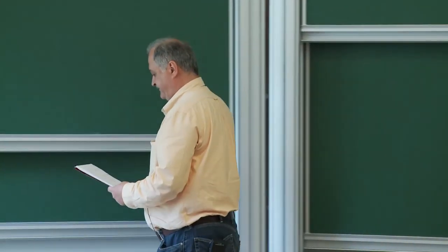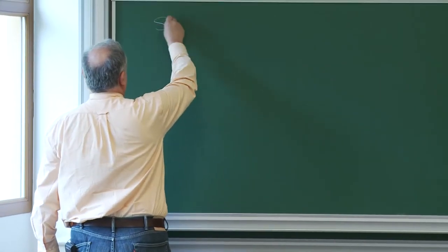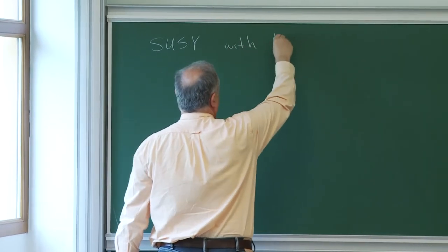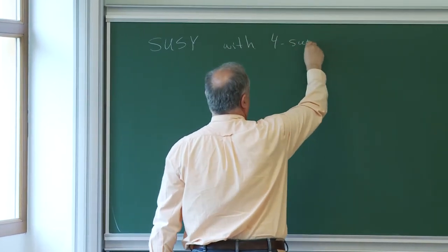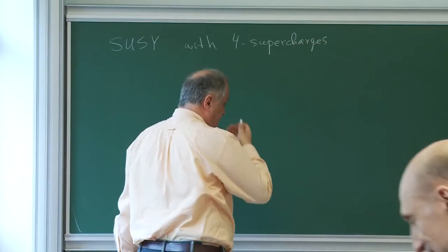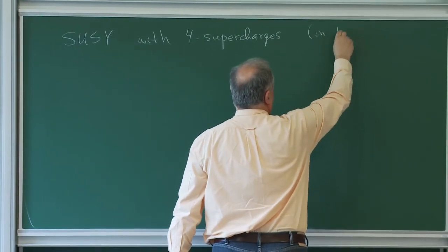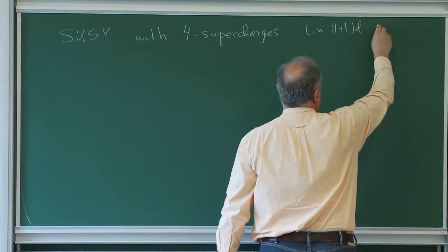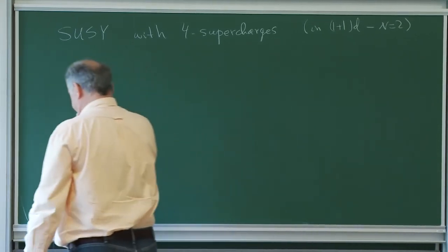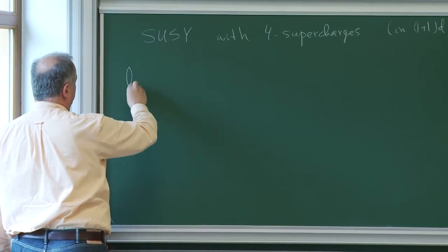I want to start with supersymmetric theories with four supercharges. I want to think about these theories in two dimensions — in one plus one dimension — called N equals two theories. For starters, I want to think about two-dimensional space to be a cylinder.